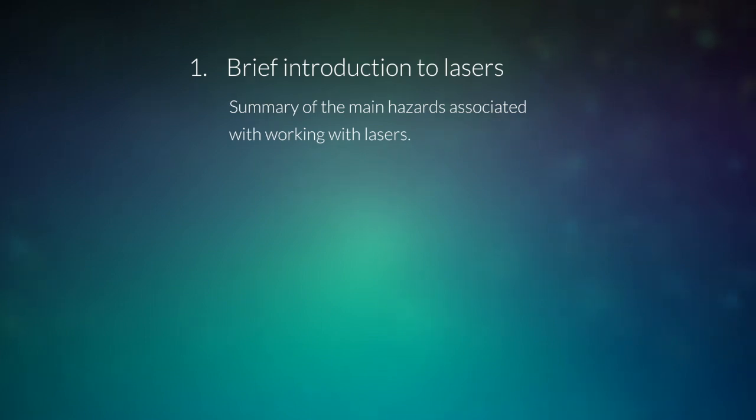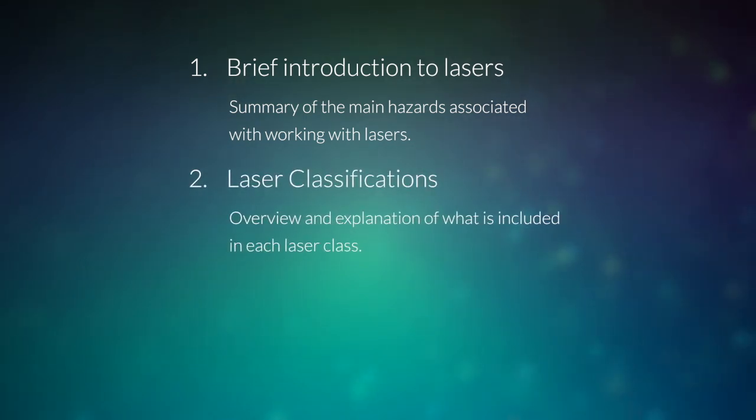To begin with, there will be a brief introduction to lasers and a summary of the main associated hazards when working with laser emission. This will be followed by an overview of the different laser classifications and what we mean by these classifications. Next we will present the hazards associated with eye injuries and injuries to the skin when working with laser light. And finally we will discuss some good practice procedures for working in a laser laboratory environment, as well as details on protective eyewear.